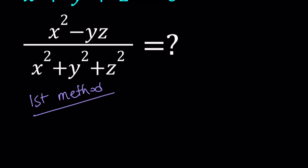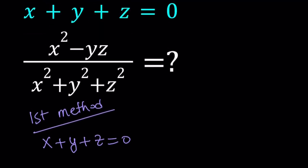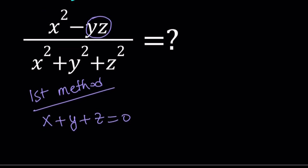For the first method, I'm going to start off with x plus y plus z equals 0, because that's what we're given. I'm going to isolate y plus z. The reason I go with y plus z is I do have a yz in the numerator. I can isolate any of these variables, but it makes sense to put y and z together so we can get something that looks like yz. So after isolating, I subtract x from both sides to get y plus z equals negative x.